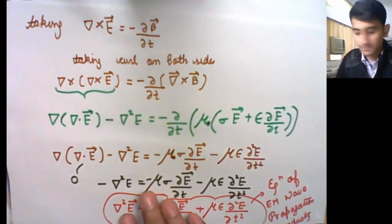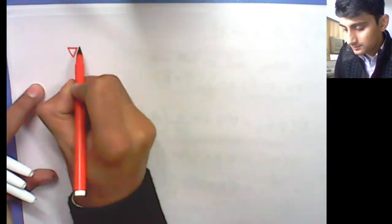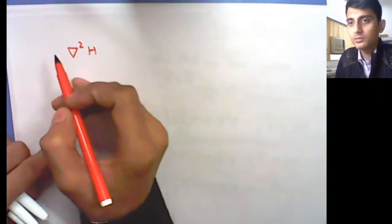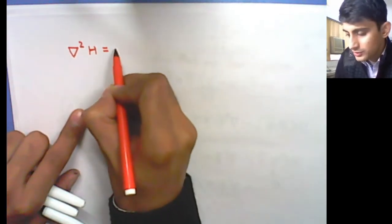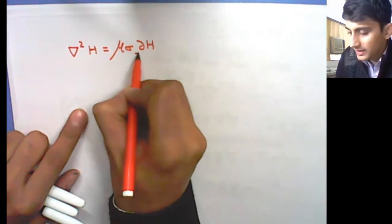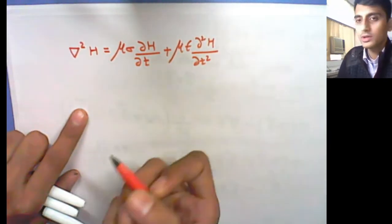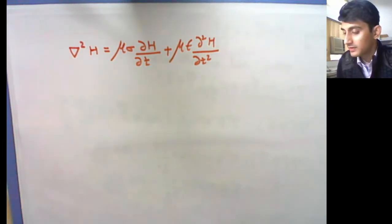Similarly, taking the second curl equation and using B equals mu H, we can write the equation in terms of H: del squared H equals mu sigma del H by del T plus mu epsilon del squared H by del T squared. So we have both equations — in terms of E and in terms of H — for propagation of electromagnetic waves in conducting media.